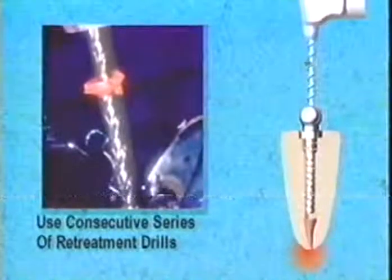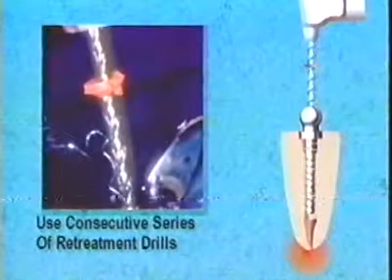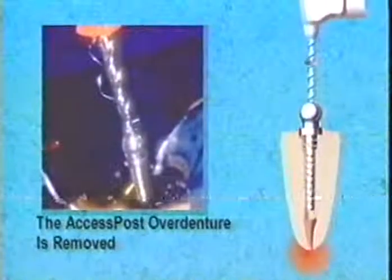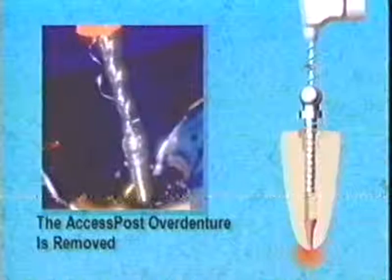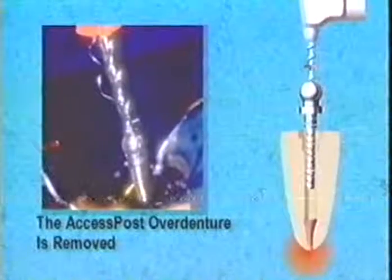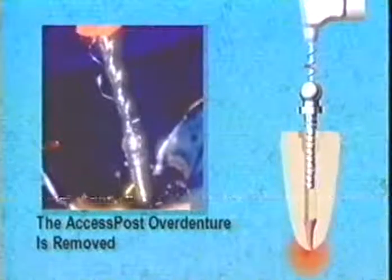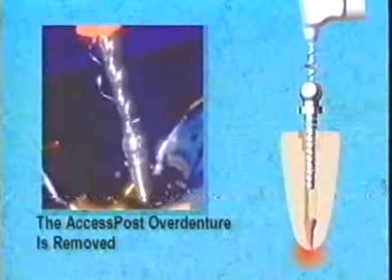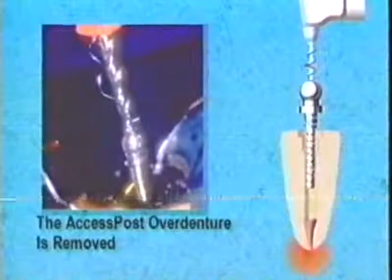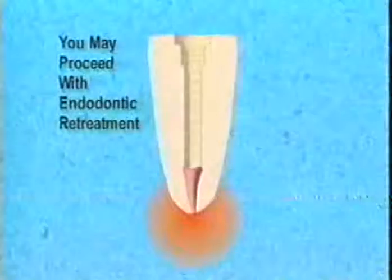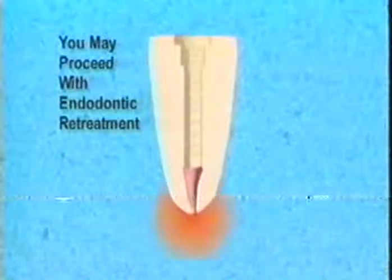The objective of retreatment is to remove the old Access Post Overdenture entirely. Note that sometimes during drilling, the second or third drill will bind within the post. If there is enough torque, the cement seal will break and the post will loosen, allowing for removal. Also, during the course of drilling, the post may loosen but not come out. In this case, disengage the drill from the handpiece and rotate the post by hand. This will remove the cement from the post undercuts and allow for post removal with the hemostat. You are now free to proceed with endodontic retreatment.